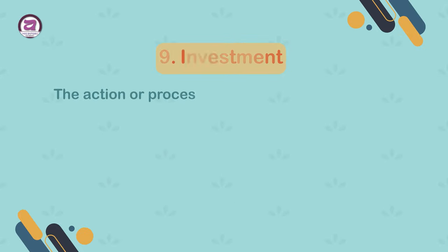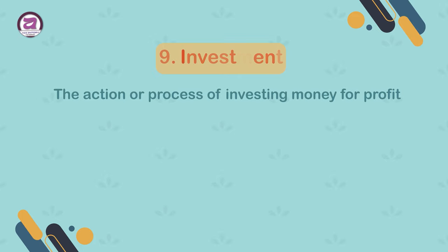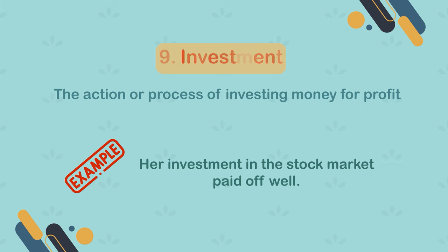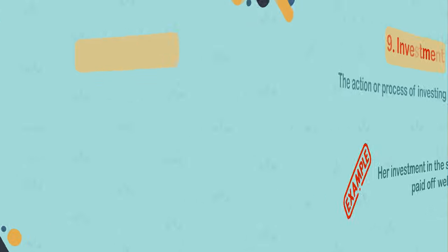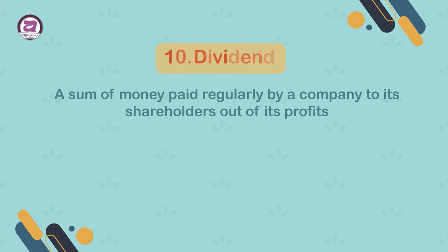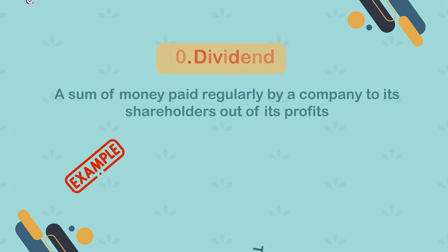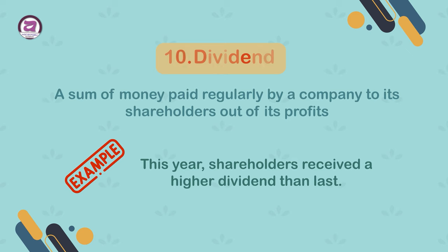9. Investment. The action or process of investing money for profit. Example: her investment in the stock market paid off well. 10. Dividend. A sum of money paid regularly by a company to its shareholders out of its profits. Example: this year shareholders received a higher dividend than last.